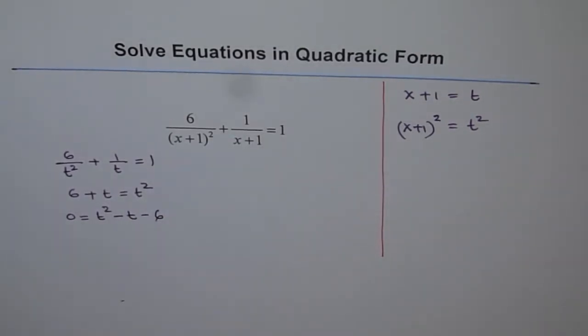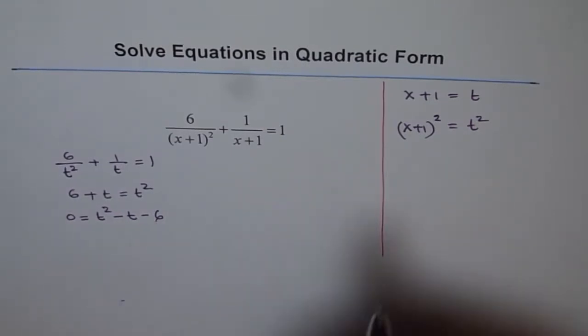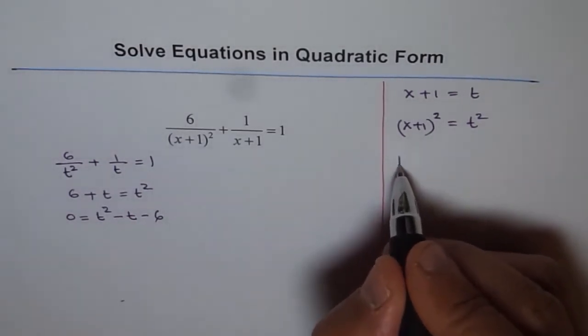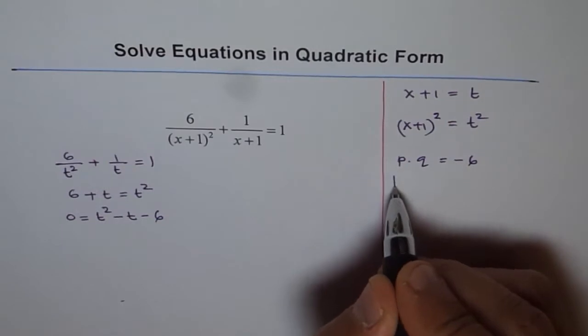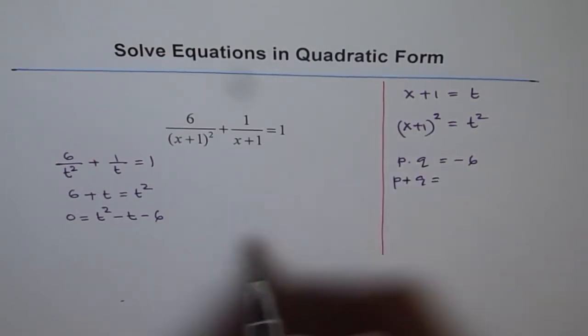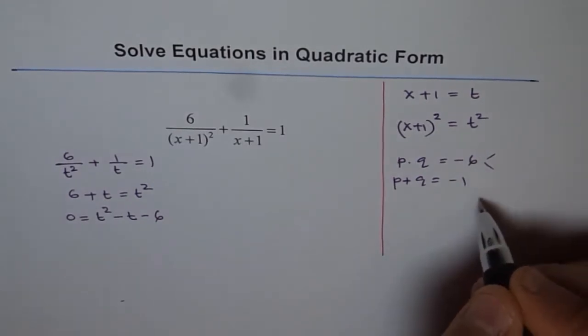Now we know the factoring techniques. So we need two numbers whose product is minus 6. That means we are looking for p times q which will give us minus 6 and when you add p and q you should get minus 1. So the two numbers could be 3 and 2.